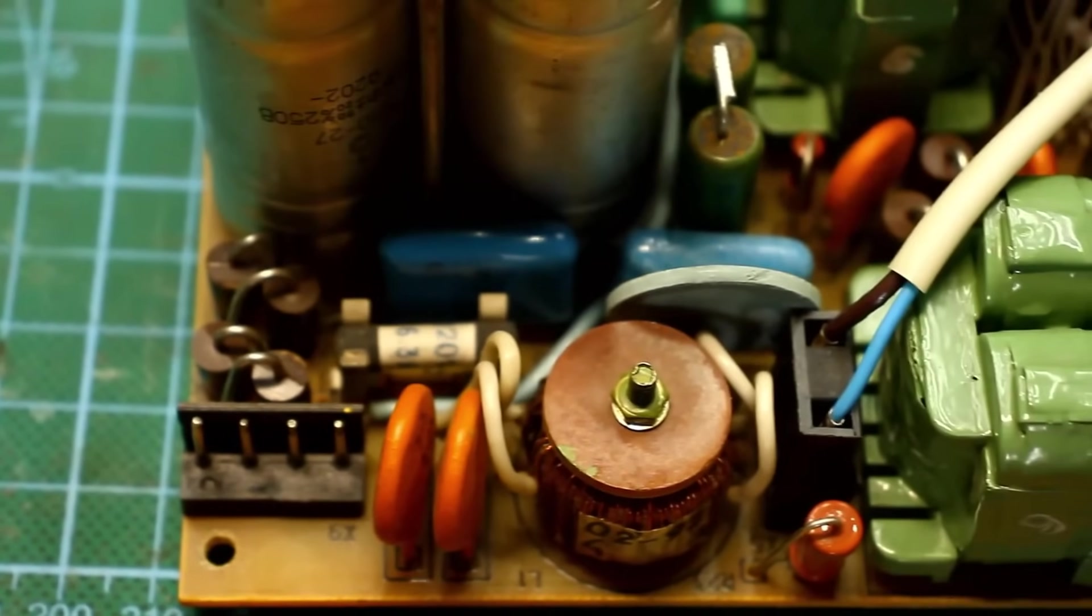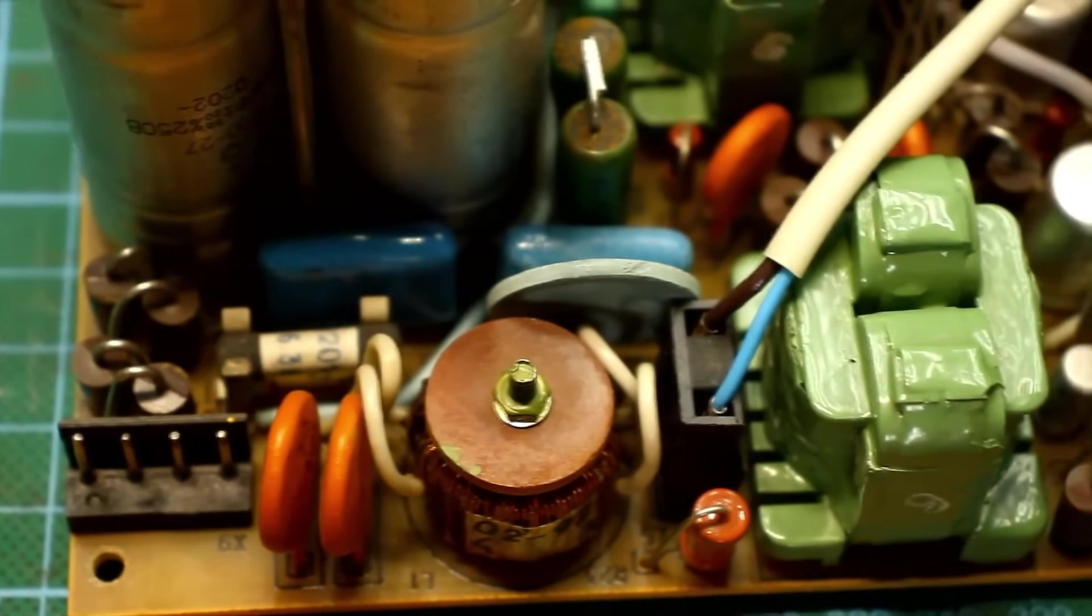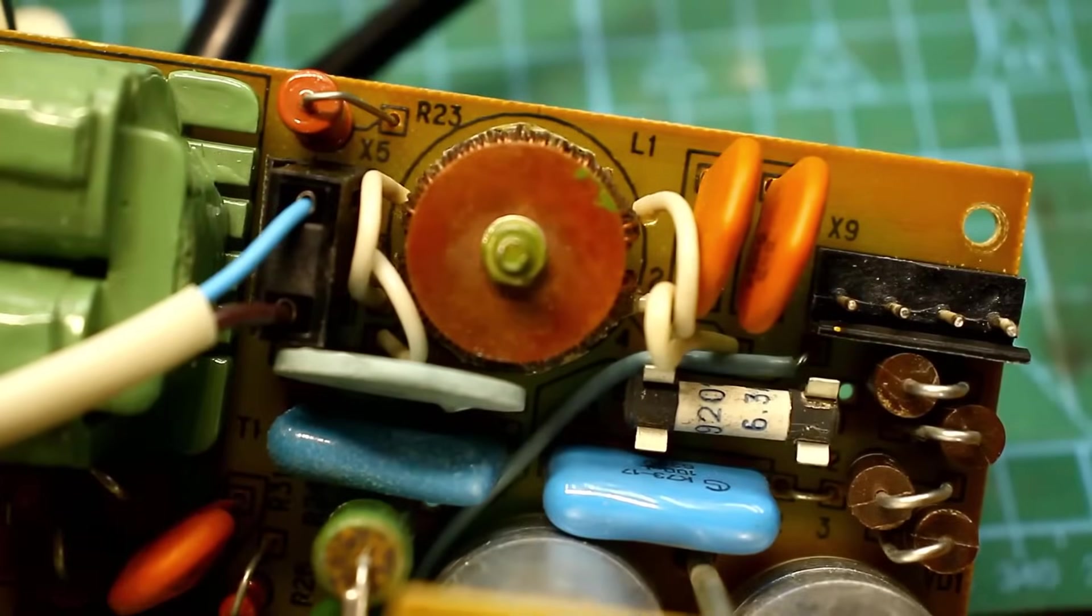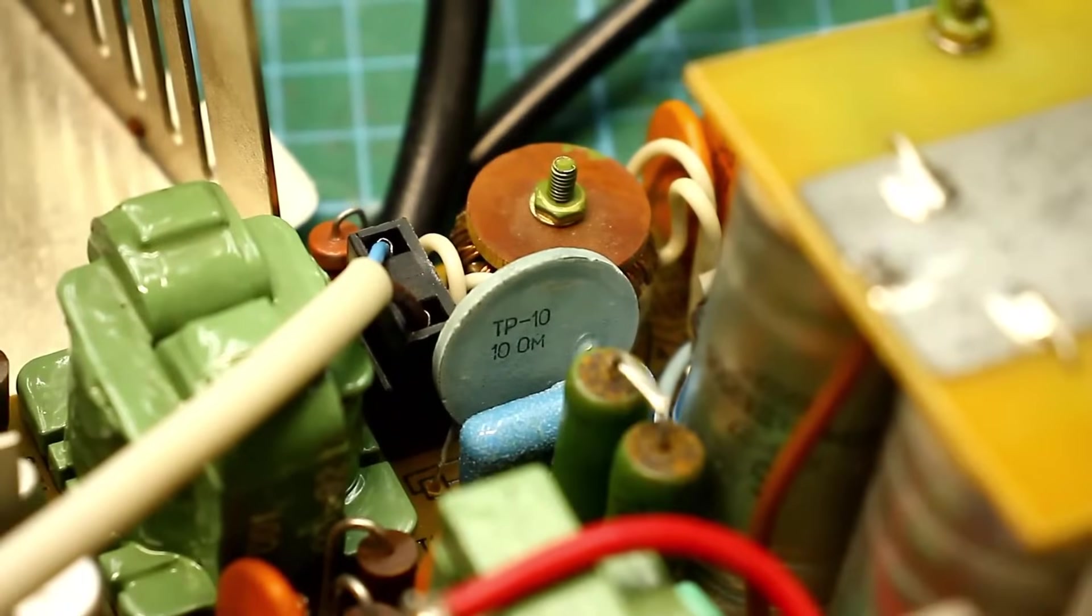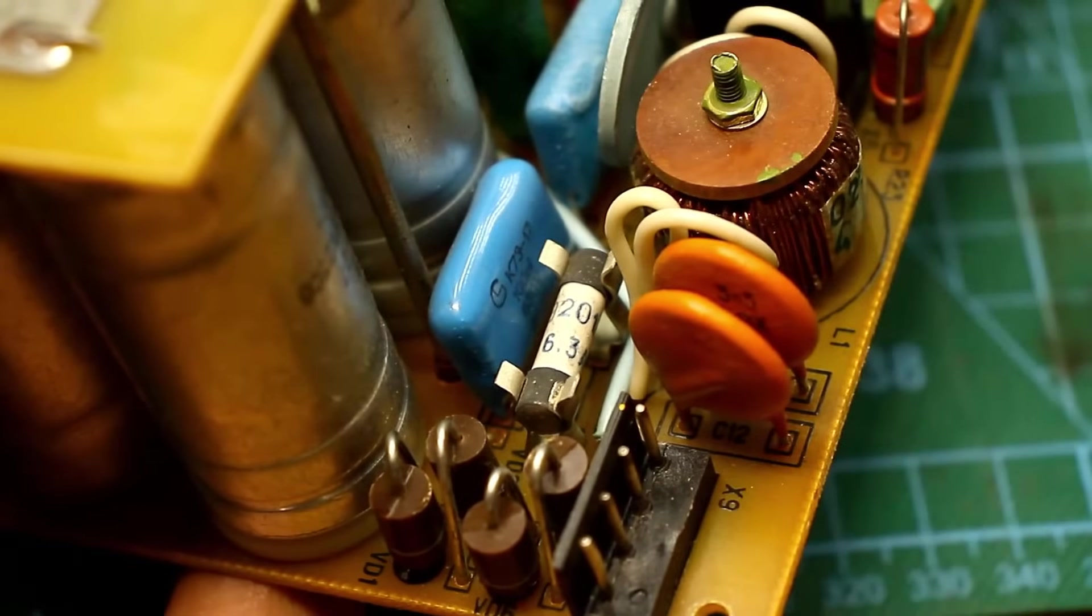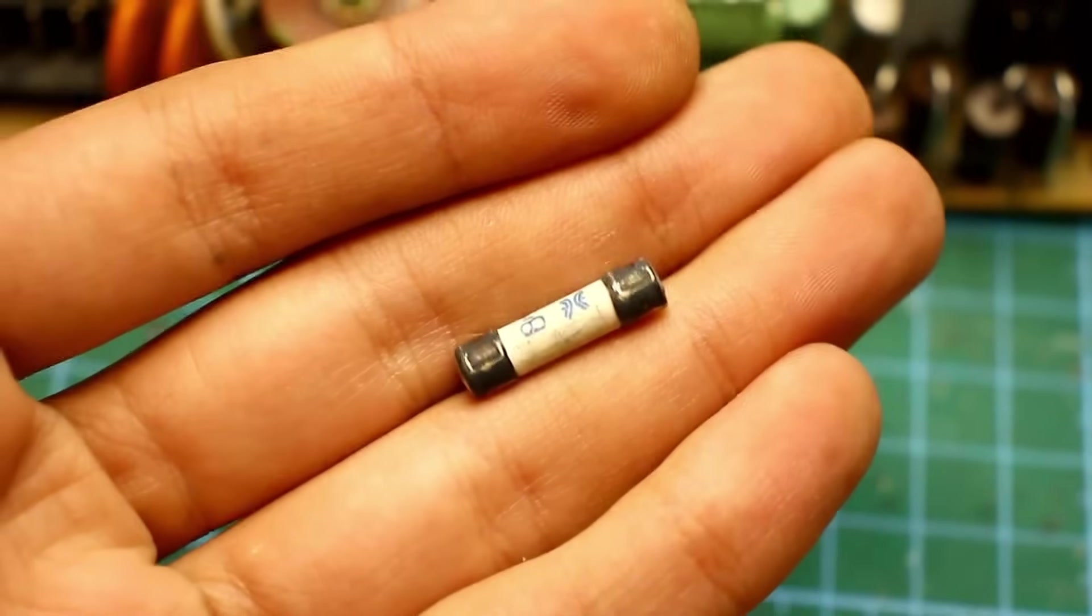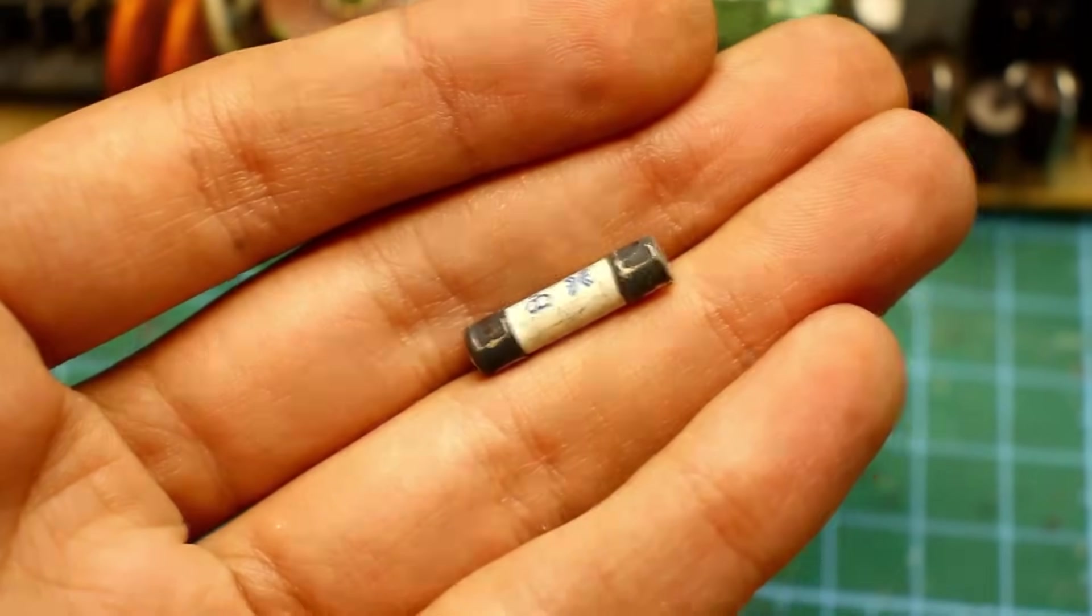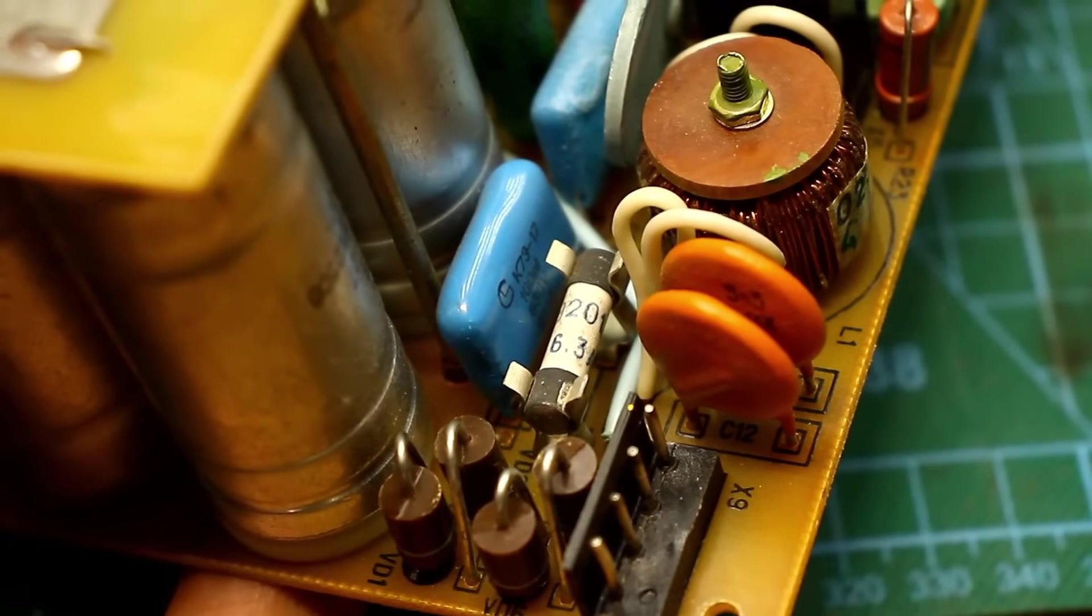The input section also commands respect. Everything here is done smartly. At the input, there is a line filter with a common mode choke and appropriate capacitors, a thermistor and, of course, a fuse. It's rated at 6.3 amperes. The contacts have darkened a bit, but that's nothing. By the way, as far as I know, the contacts of such fuses are silver-plated. Correct me if I'm wrong.